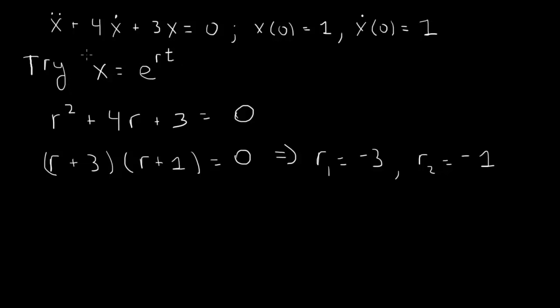With our solution assumed as x equals e to the rt, we found two solutions. We can use the principle of superposition to write x of t equals constant c1 times e to the r1t minus 3t plus c2 times e to the r2t, which is minus t.